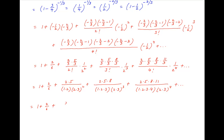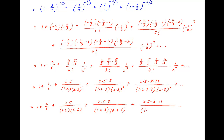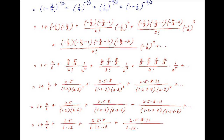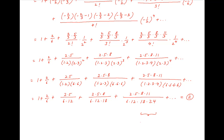This can finally be written as 1 plus 2/6, plus 2 times 5 upon 6 times 12, plus 2 times 5 times 8 divided by 6 times 12 times 18, plus 2 times 5 times 8 times 11 divided by 6 times 12 times 18 times 24, plus and so on. Notice that this is identical to the second series given in the problem statement, which completes the proof.